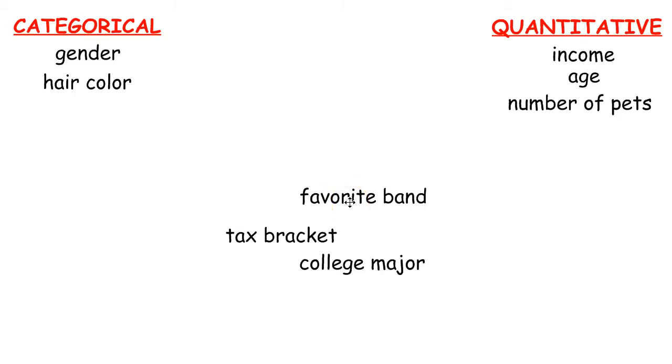Favorite band. Well, a band is usually not considered a number. So it would fit into a category. Now, there's lots and lots of different favorite bands you could choose from. But again, because it's lumping into different groups, lumping into different categories, it's a categorical variable.